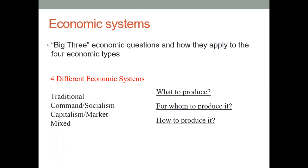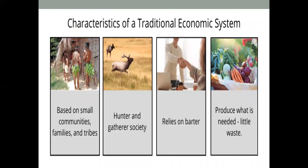In our journey today, we are going to look at four different economic systems that exist. Let's start with the classical and traditional economic system, which is based on small communities and families. They have certain customs and traditions and live on hunting, fishing, or depending on the available resources they have for income. They rely on trading with one another in terms of products.